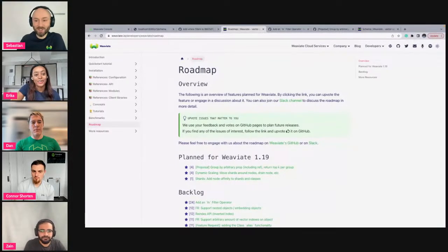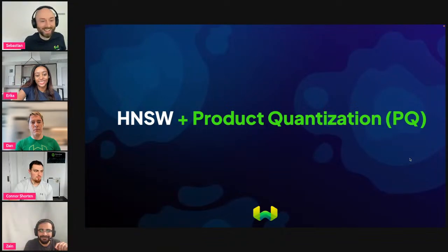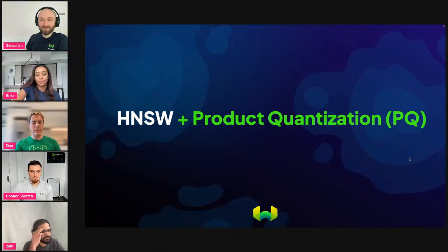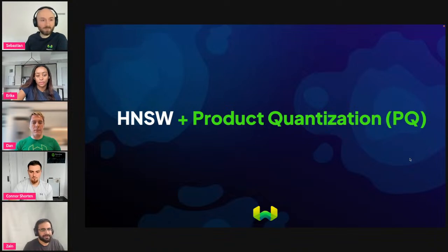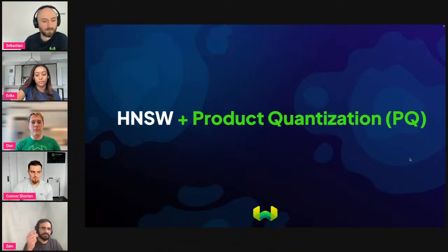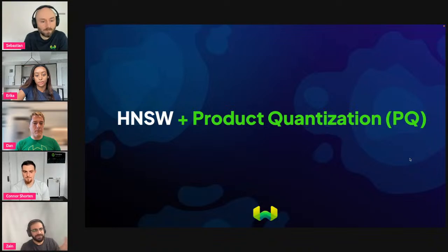Now we move on to HNSW and PQ — Zain, take it away. So 1.18 adds a new vector compression feature called Product Quantization (PQ) that works with our HNSW index. It essentially lets you store your vectors in memory with one-fourth the requirements — though this ratio can change depending on the PQ parameters you set. I want to give a quick five-minute intro to what PQ is and how you might use it.